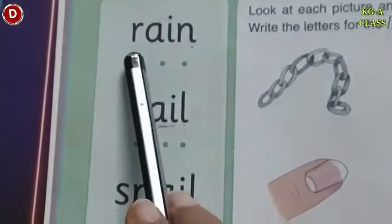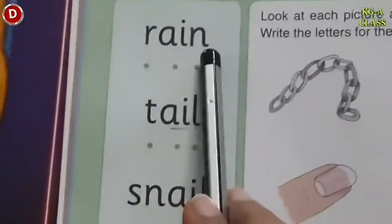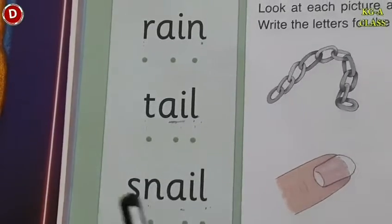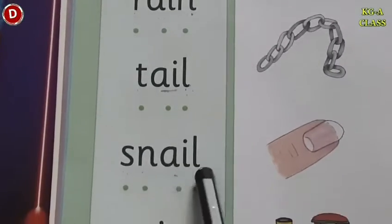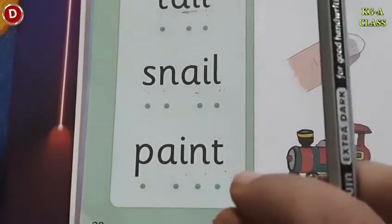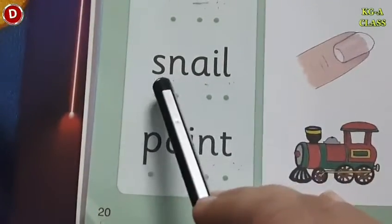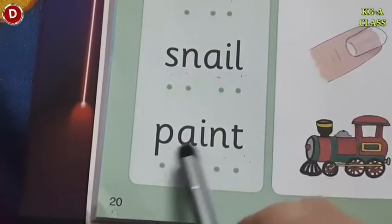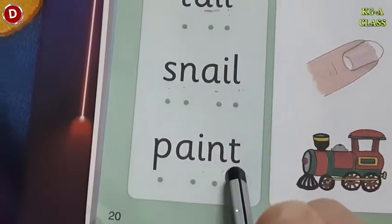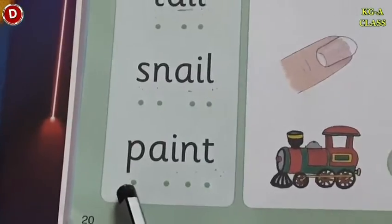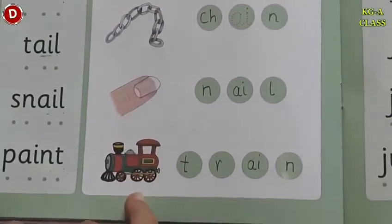Again we will read, children. R-A-N, Rain. Rain means barish. Then A-L, Tail. Tail is pooch. S-N-A-L, Snail. Snail is a creature that lives in shells — jisko ghonga bolte hain Hindi mein. P-A-N-T, Paint. Paint matlab color karte hain na — Diwali pe paint karte hain, woh hota hai paint. So in this way, children, you have to do the reading of page number 20.